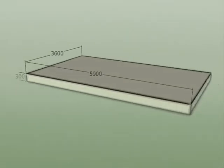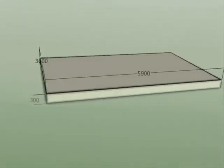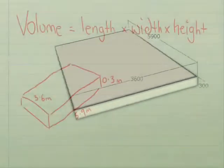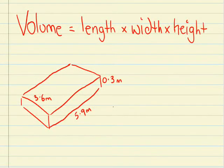So the first one here is a nice little rectangular prism which means 5.9 metres by 3.6 metres by 0.3 metres.